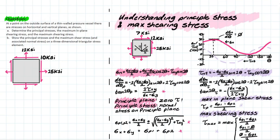We can use our previously found equations to solve for these critical values. At the peak or apex of a function, the slope is zero. So if we take the original stress transformation equation, derive it, and set it to zero, we can isolate and solve for an equation: tan(2θ_p), where θ_p stands for theta principal, is equal to this value here. This gives us a function to solve for θ_p, which is where the principal stress will be developed.